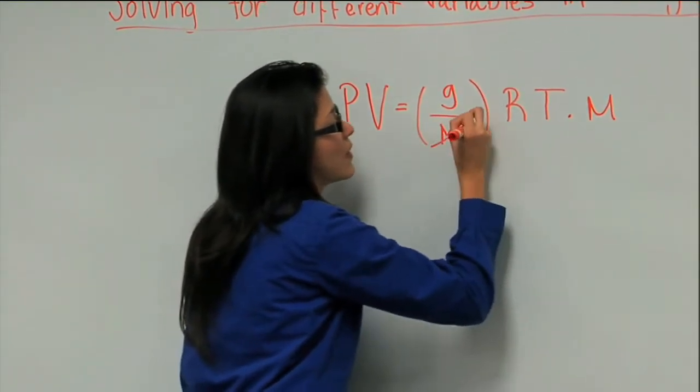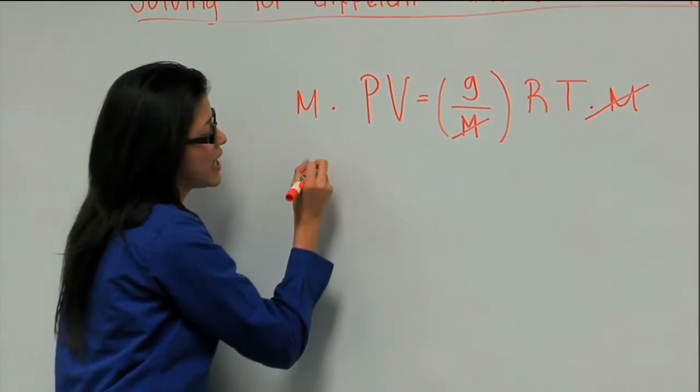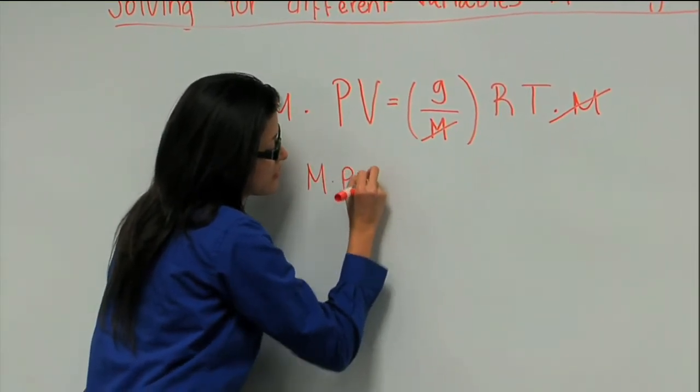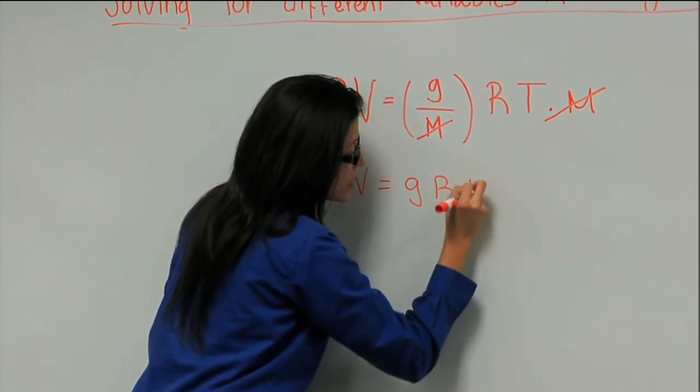So we cancel the M on this side, and now we have it on this side. So rewriting this equation, we have M times PV equals G times R times T.